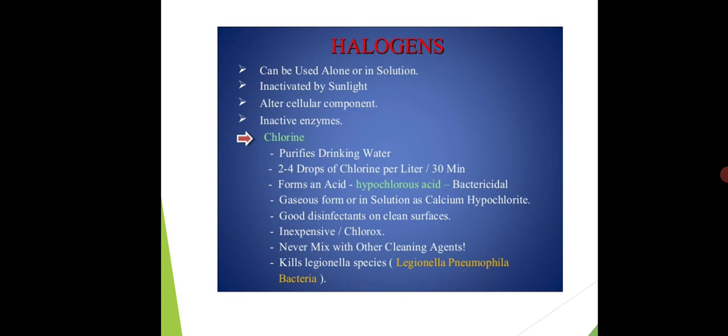What are the examples of halogens? Examples of halogens include iodine, chlorine, etc. Iodine and chlorine are mostly used as skin antiseptics and disinfectant. Iodine is commonly used as skin antiseptic. Chlorine is used in purifying drinking water. 2-4 drops of chlorine per liter water for 30 minutes, if you add, the water is purified.